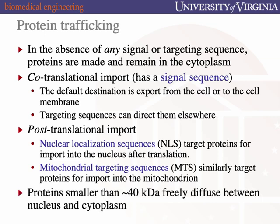One last rule of thumb: if a protein has none of these localization sequences and is small — less than about 40 kilodaltons — it will diffuse freely between the cytoplasm and the nucleus. You'll see why when we talk about nuclear pores, which form a selectively permeable barrier between the nucleus and the cytoplasm. But if the protein is small enough, it sneaks right through.